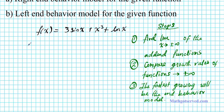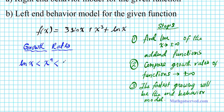Also, keep track of the growth rates of the functions. To infinity, this is the order from slowest to fastest: the slowest growing function is your logarithmic function, ln x. Next is the power function, x to the a. Then the exponential function, a to the x — this is kind of like a polynomial, rational, or even radical function. And the fastest growing function is x to the x. So slowest is logarithmic, followed by power, then exponential, and fastest is x to the x.